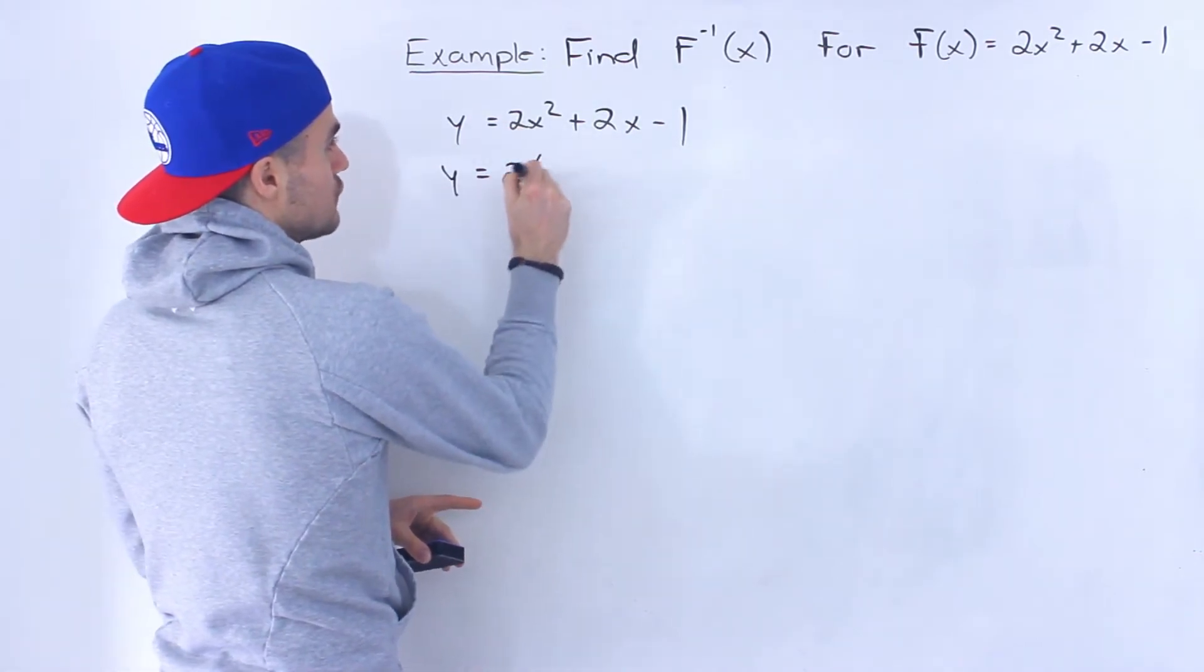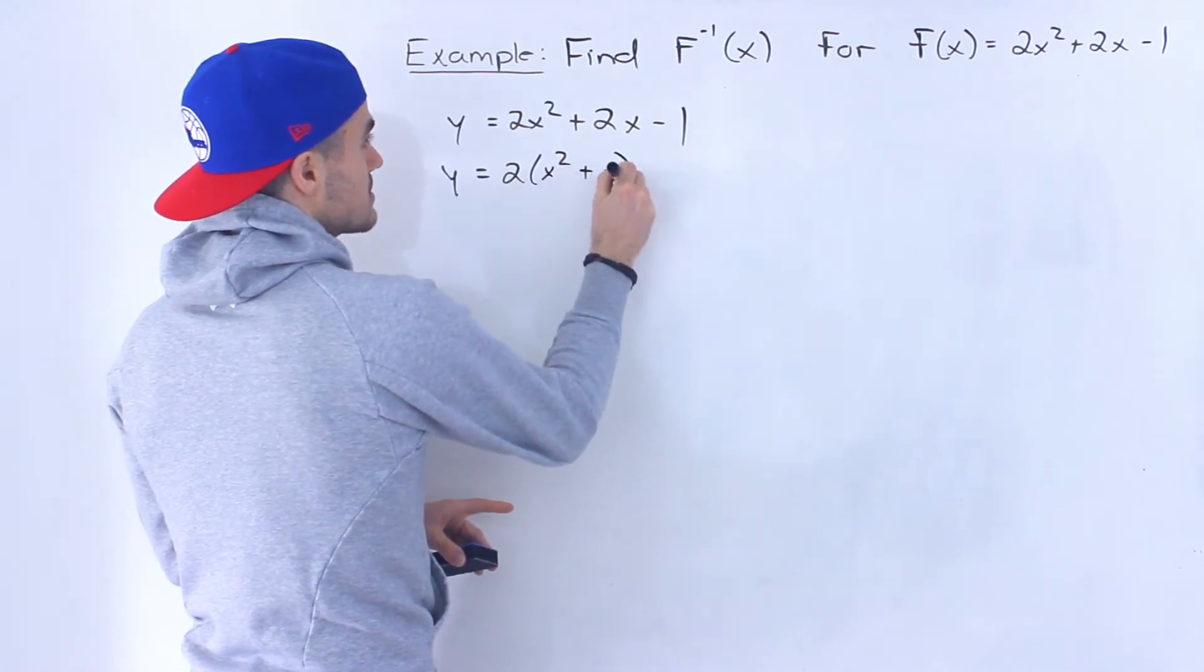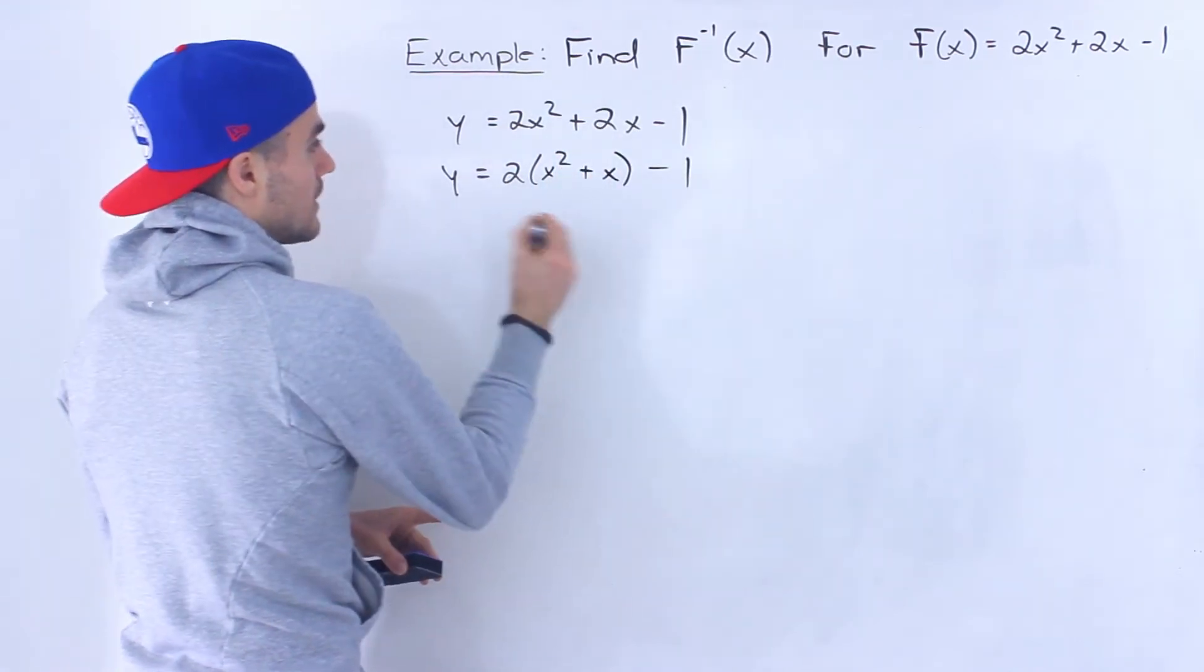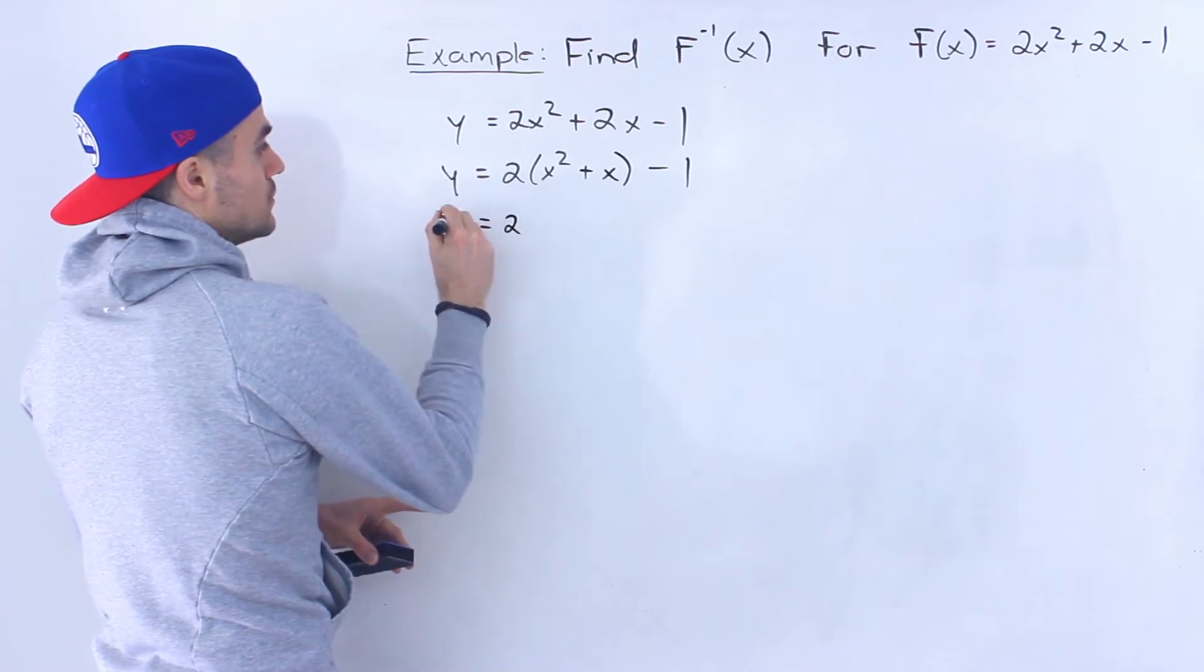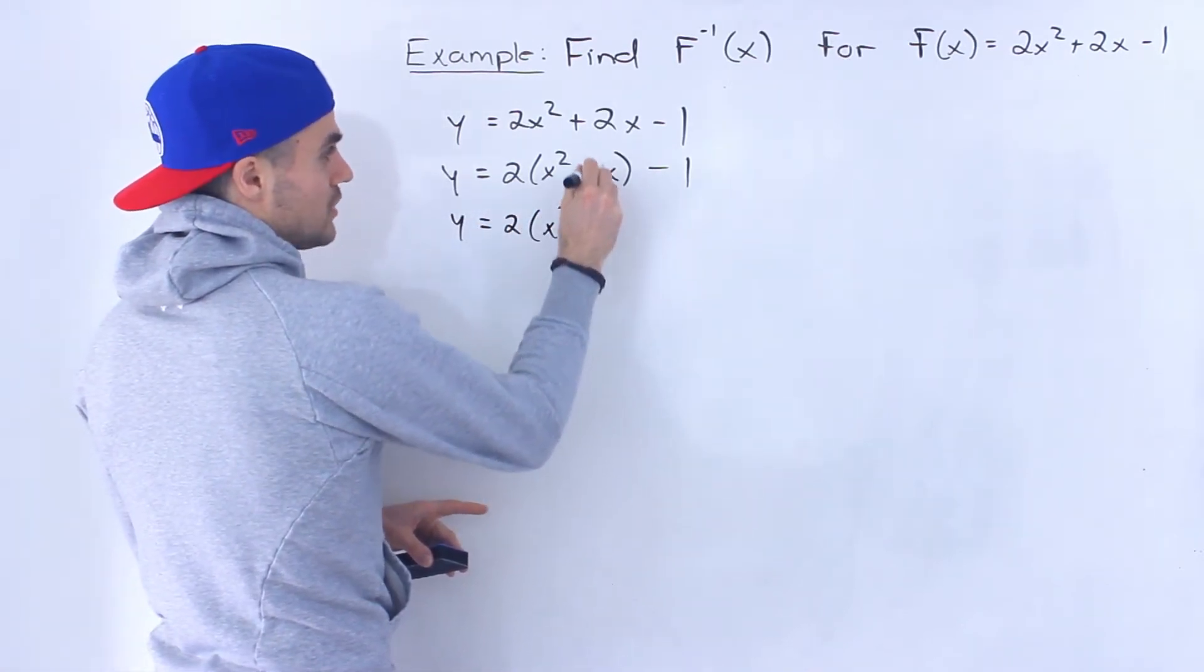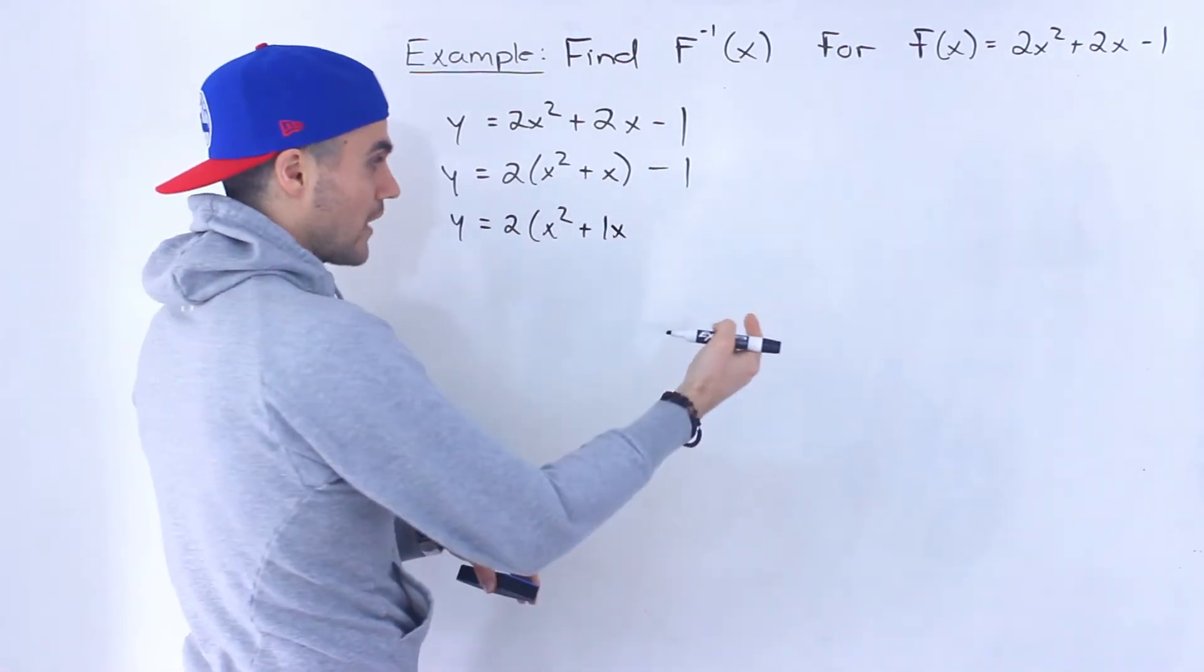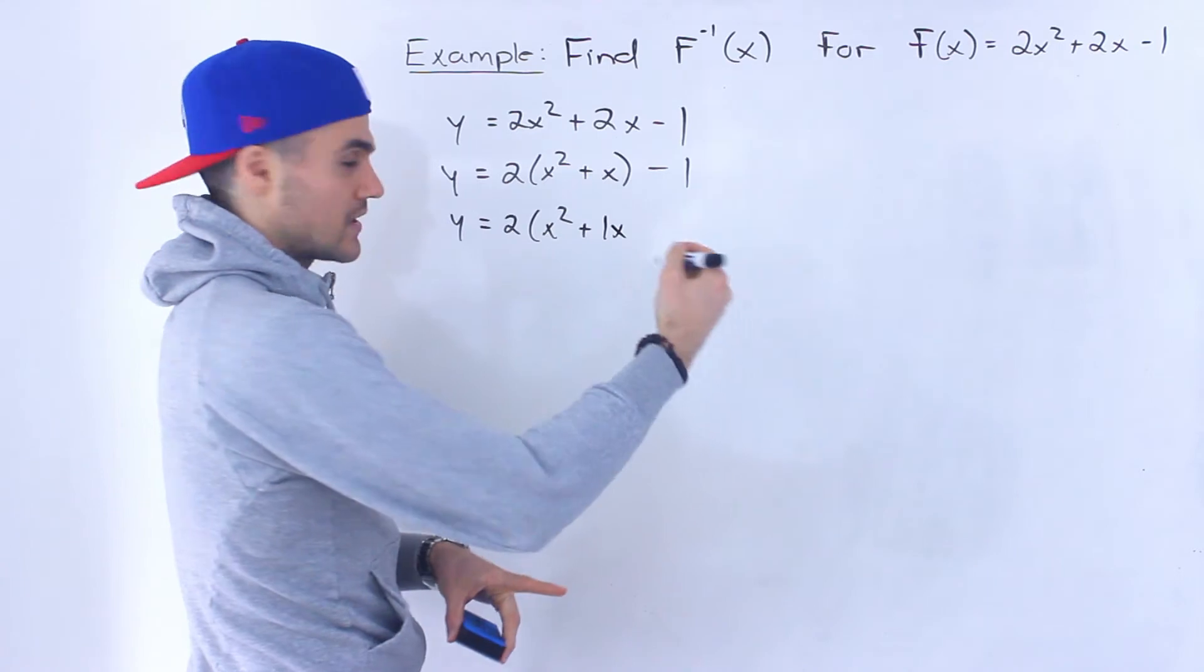The way we would do that, we would take out a 2 from the first two terms. We'd end up with x squared plus x, like that. Then we have minus 1 on the end. Then what we would do is we would take this b value here in the bracket. Half of it is 0.5. Square it. 0.5 squared is 0.25.